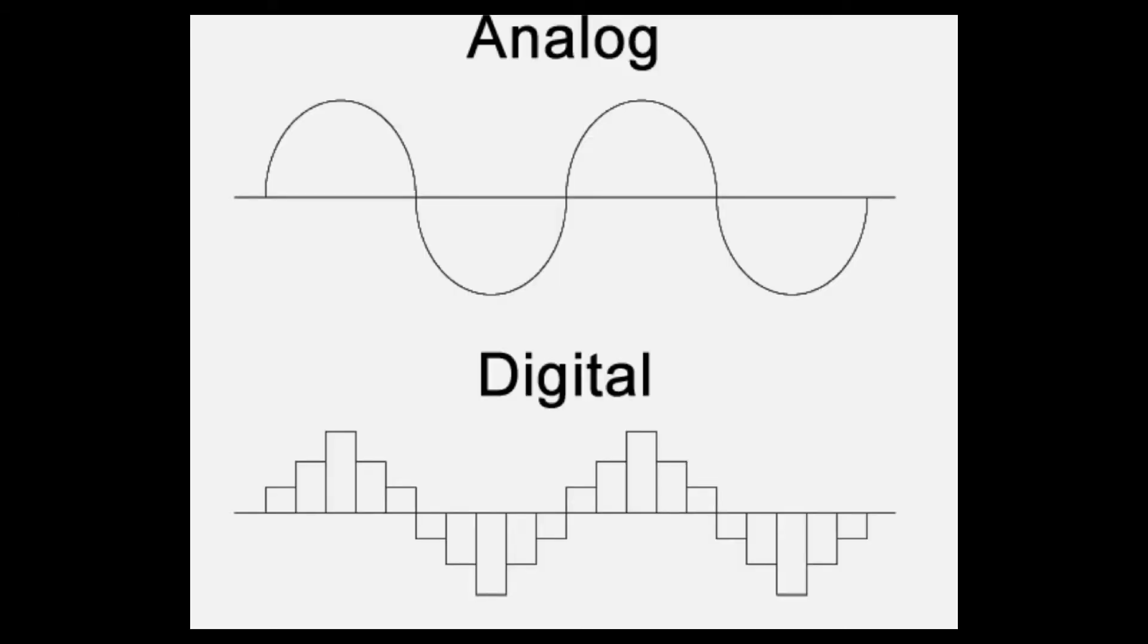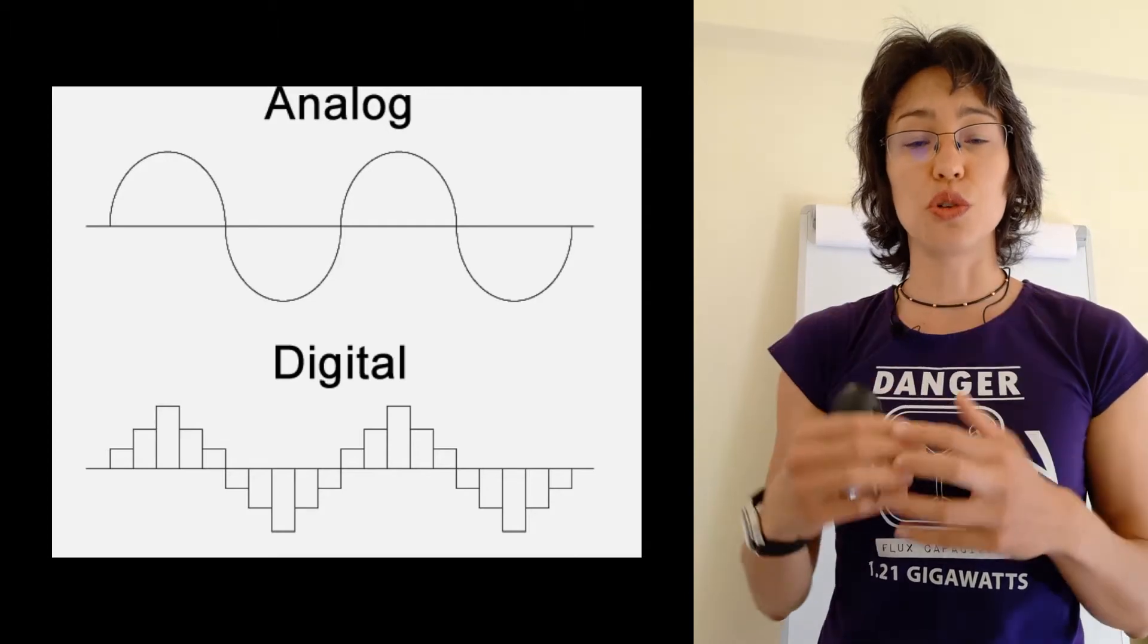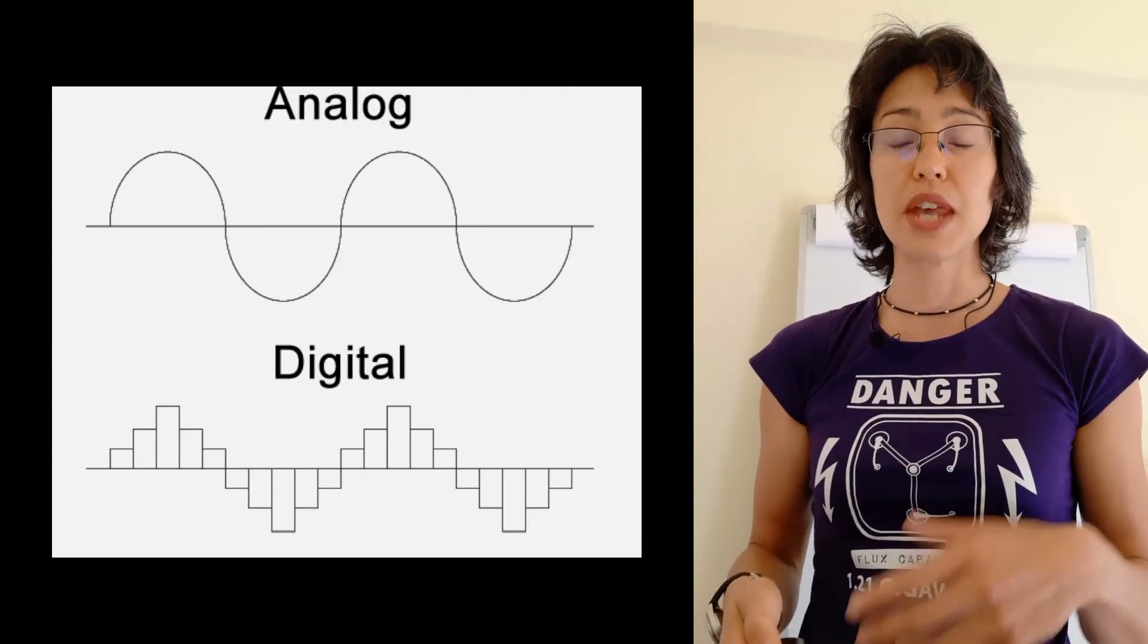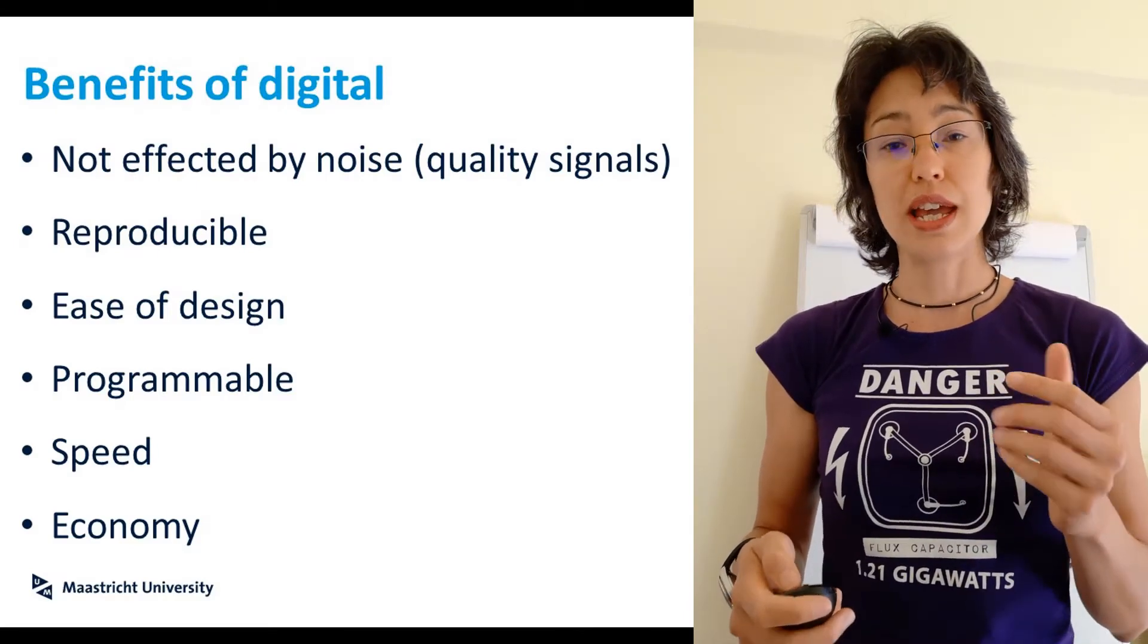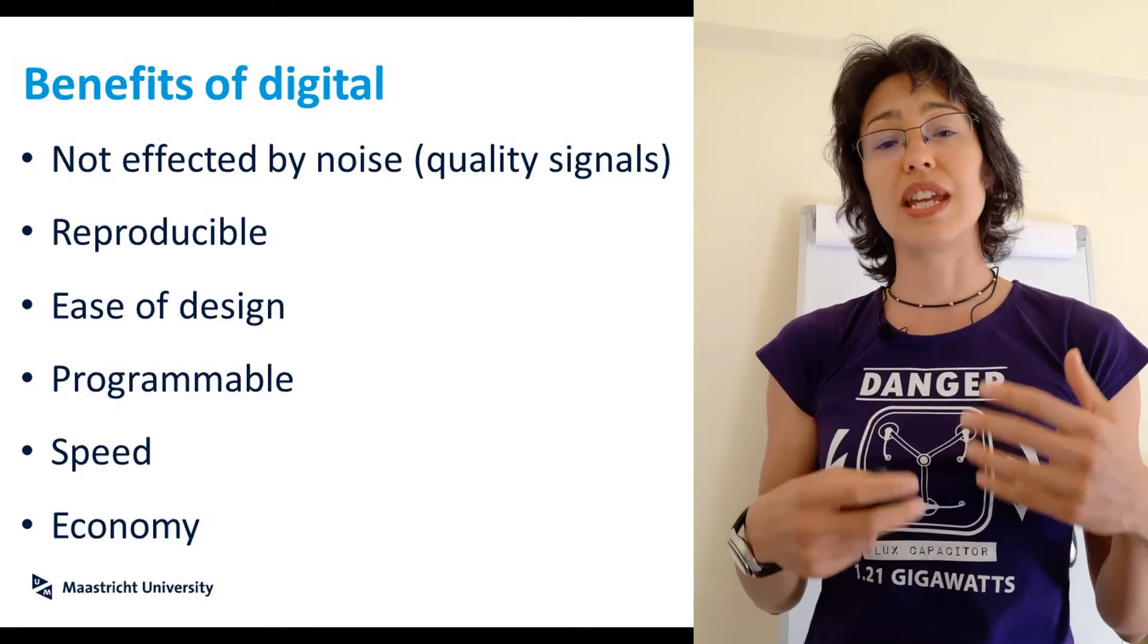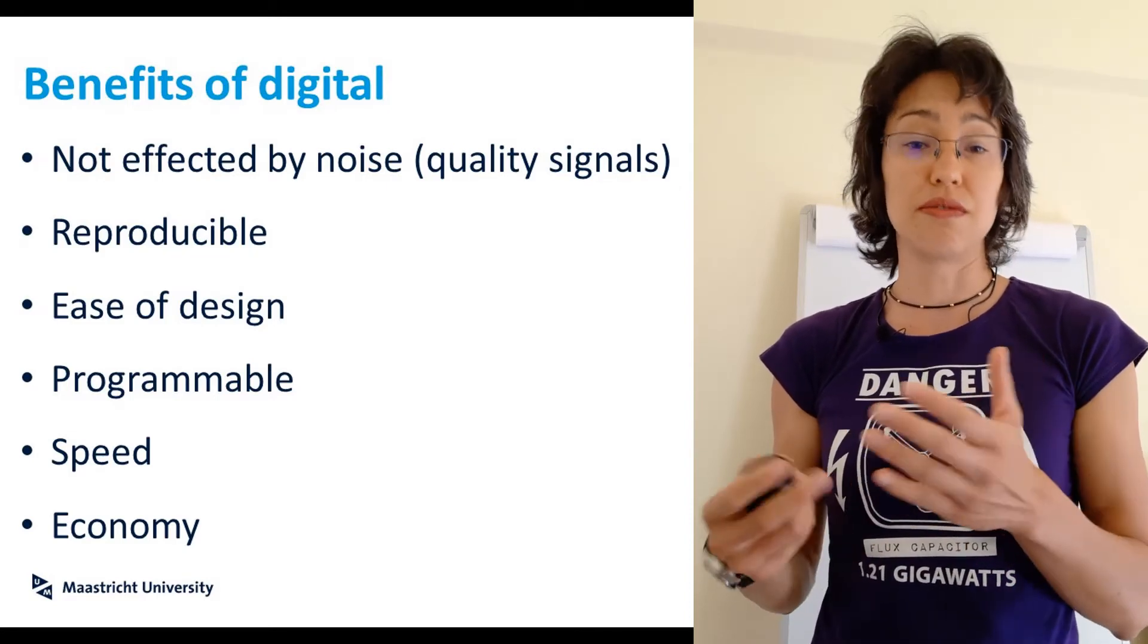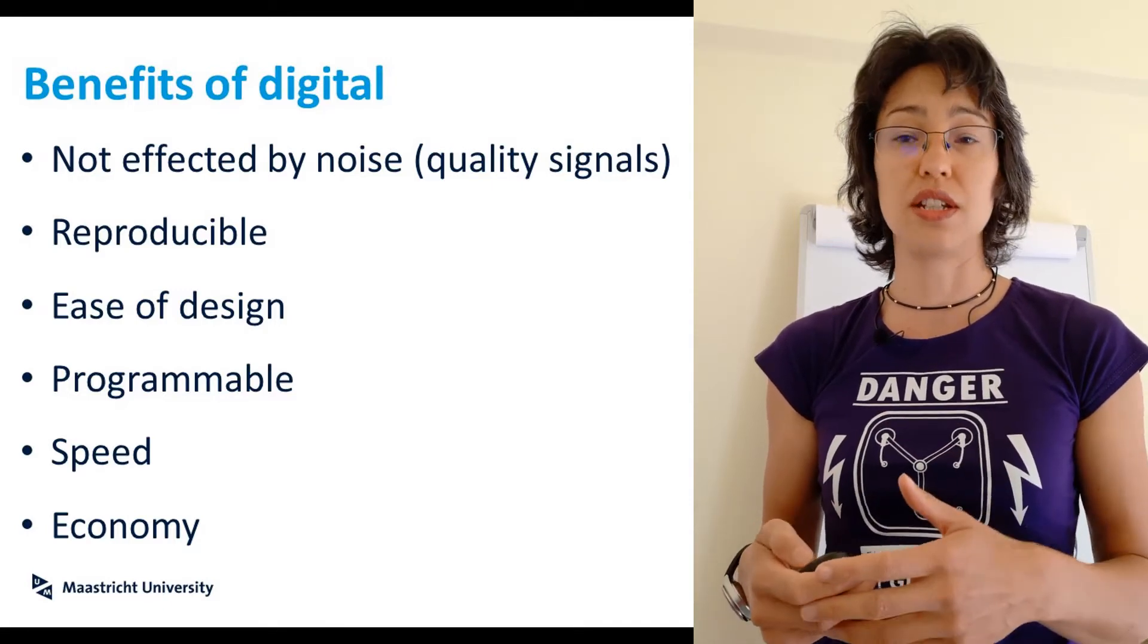Analog systems process time-varying signals that can take any value over a continuous range of voltages. Digital systems can only process time-varying signals that have discrete voltages. Because we're talking about discrete or exact values, digital signals aren't affected by noise in the same way that analog signals are, so this makes them very easily reproducible. Digital systems tend to be very easy to design and programmable, and therefore faster, so they have numerous advantages over analog systems.